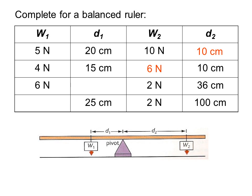In the second row, you'd have 6 newtons, 6 times 10 is 60, and 4 times 15 is 60. And here, 6 times 12 and 2 times 36. And on this side, 8 times 25 and 2 times 100.